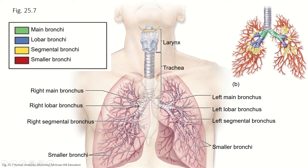Notice that the right main bronchus splits into one, two, three lobar bronchi. Those send air to the three lobes. In the left main bronchus, there are only two lobes, so we only have two lobar bronchi. And then those branch into segmental, and those branch into smaller and smaller bronchi.